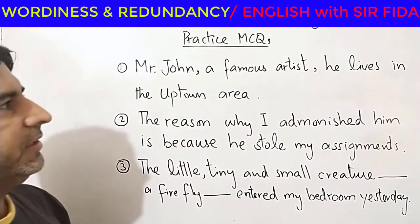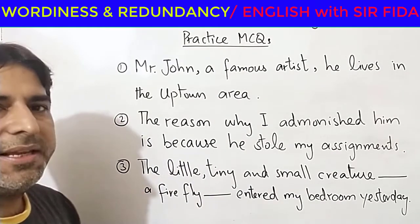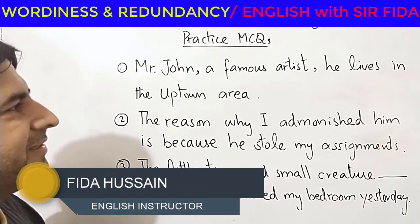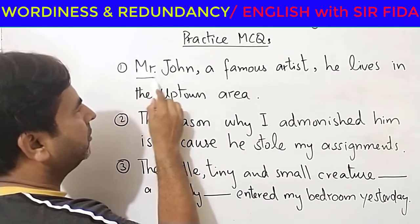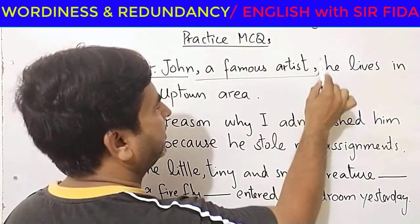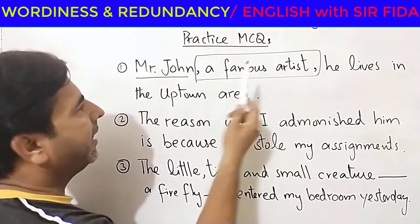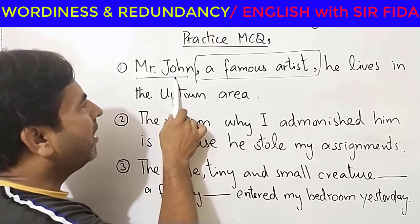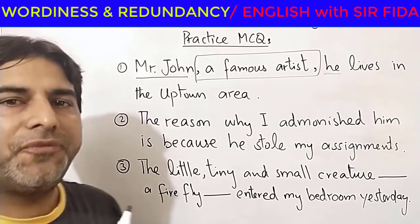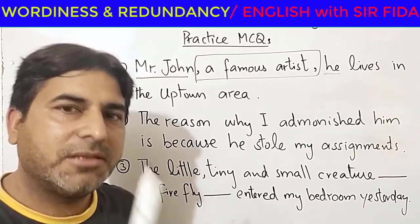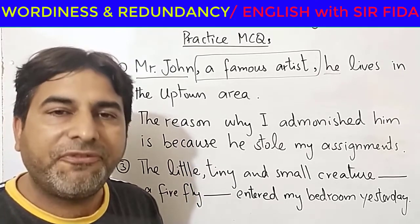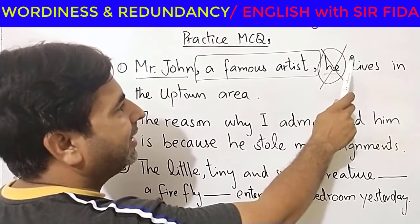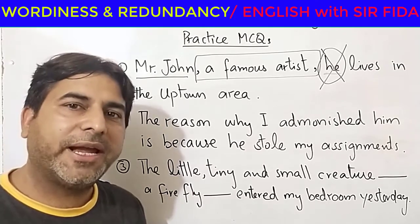Look at the first example: 'Mr. John, a famous artist, he lives in the uptown area.' It may be grammatically close, but there is an error of style. Mr. John is the subject of the sentence, so using 'he' afterward gives two subjects to one sentence — one is the noun 'Mr. John' and the other is the pronoun 'he'. A pronoun is simply the replacement of a noun, so you can only use one. The correct sentence is: 'Mr. John, a famous artist, lives in the uptown area.'